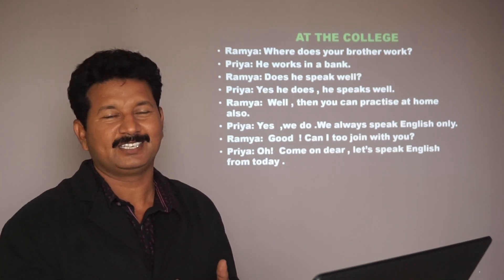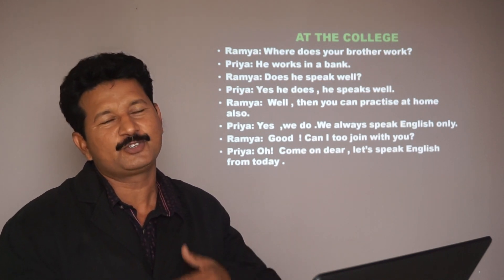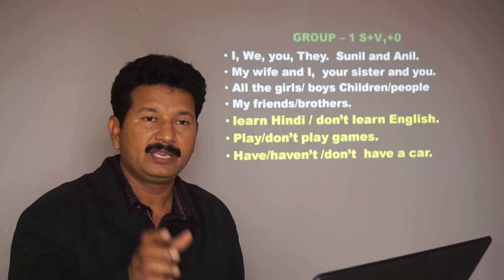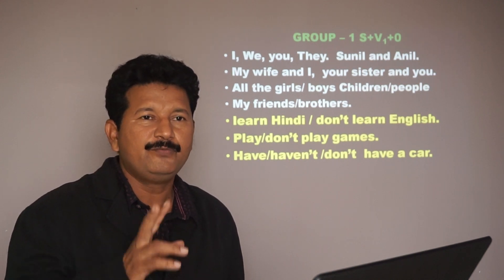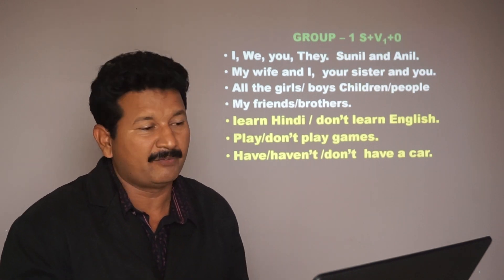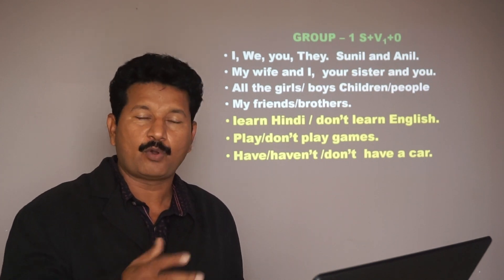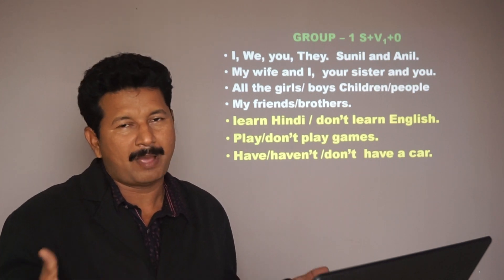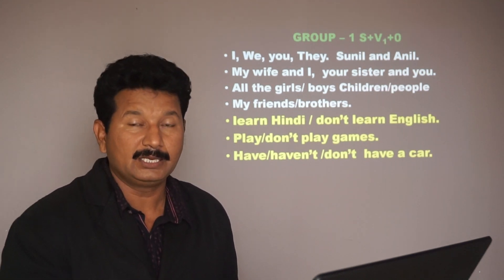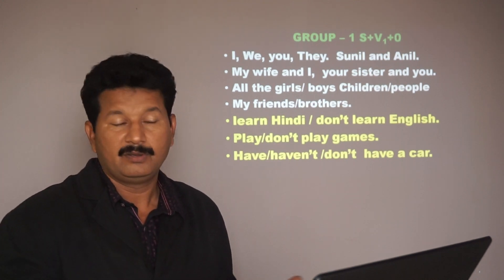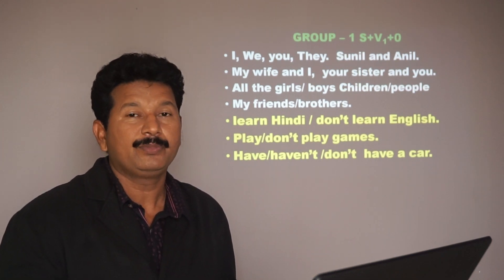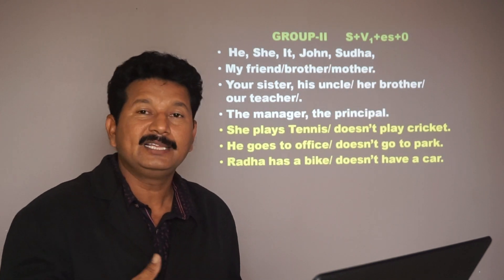If you watch this conversation you can see all the different kinds of sentences we talked about earlier. Now let us practice more for perfection. In simple present tense there are two groups. Group 1 uses subjects like I, we, you, they, Sunil and Anil, all the boys and girls, my friends, my brothers — you use the structure subject plus base verb (V1). For example: I learn Hindi, I don't learn English; I play games, we don't play cricket; I have money but I don't have a car.